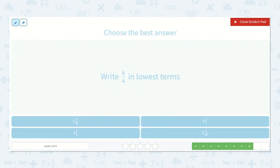Right? 6 fourths in lowest terms. 6 fourths. Well, I know I can divide the top and bottom by 2. 6 divided by 2 is 3. 4 divided by 2 is 2.